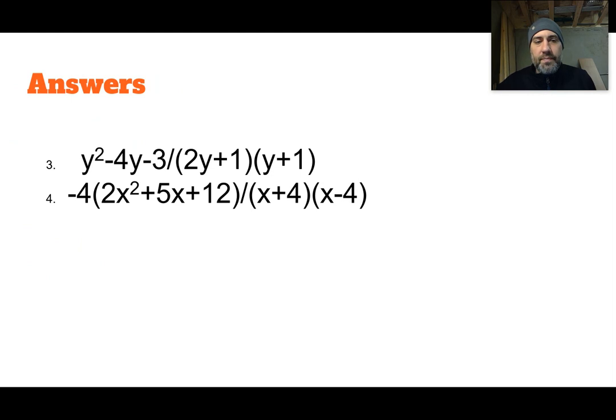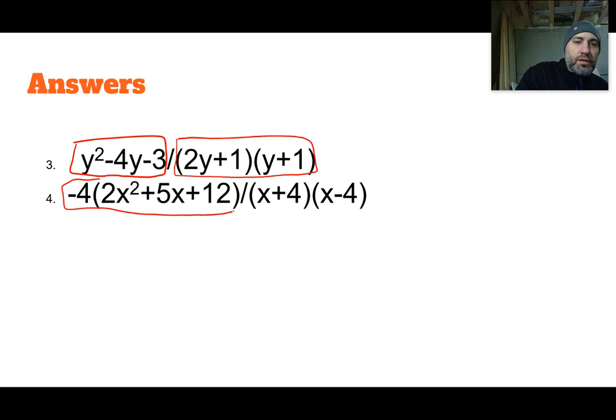Those are your answers there. When you look at your answers, obviously you can see in the first one, they showed you the numerator and here's your denominator. I guess if you wanted to multiply the denominator back together, you could and get a trinomial. And then in the second one, here's your numerator and here's your denominator.